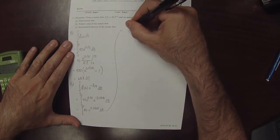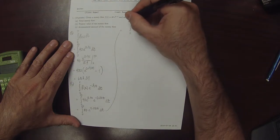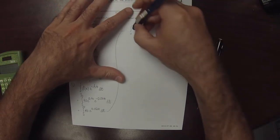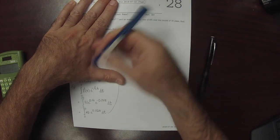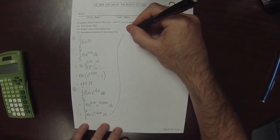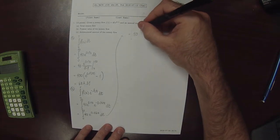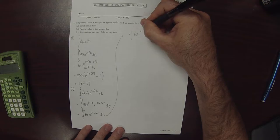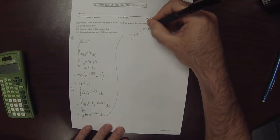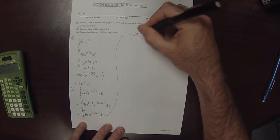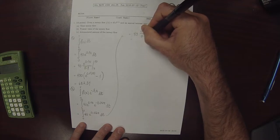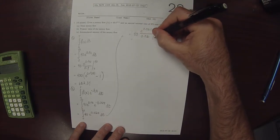We're going to do it now. Use the fundamental theorem. So this is 40 exponential of 0.02 T divided by 0.02, and then evaluated from 0 to 10.